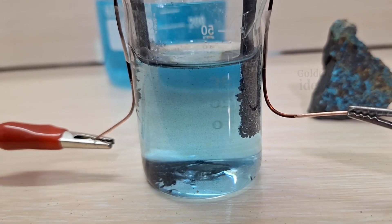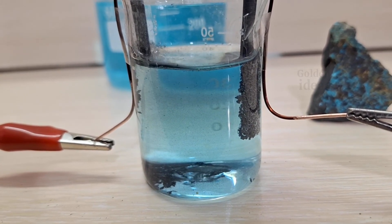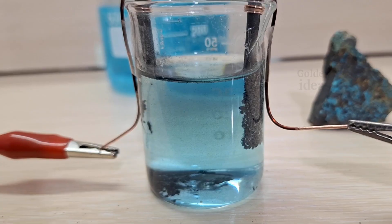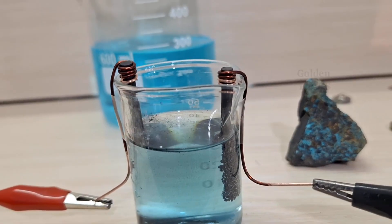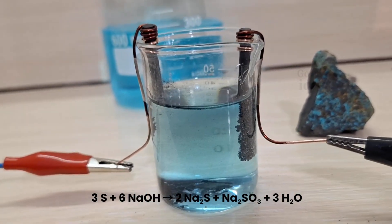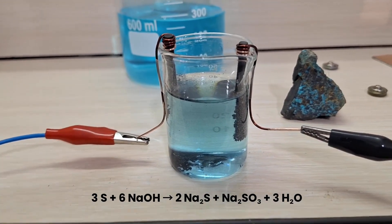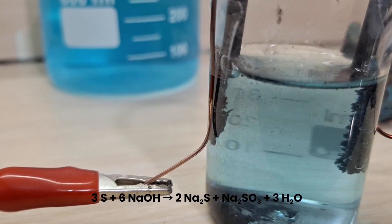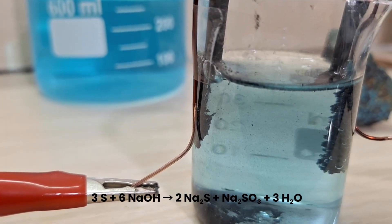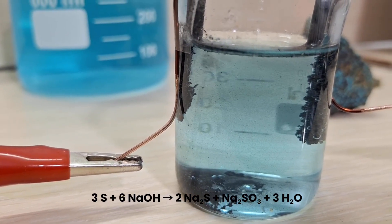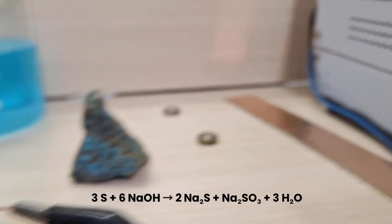That's because sulfur doesn't easily enter into a chemical reaction on its own. However, if we boil sulfur together with sodium hydroxide, we create a compound called sodium sulfide.